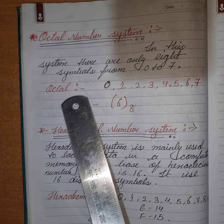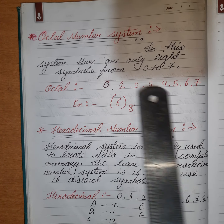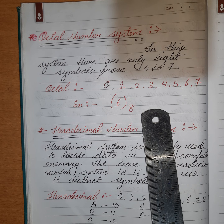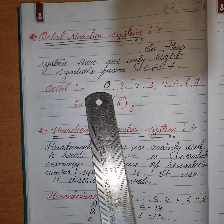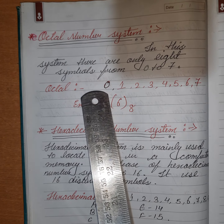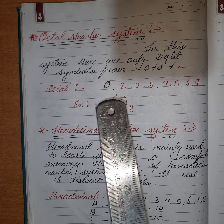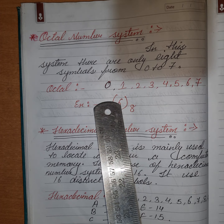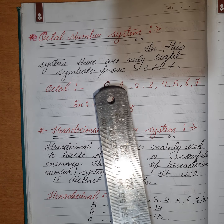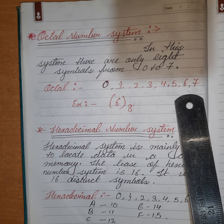The position of each digit carries a weight in ascending powers of 8, going from right to left. This means that in the octal number system, each position represents an increasing power of 8, starting from the least significant digit.